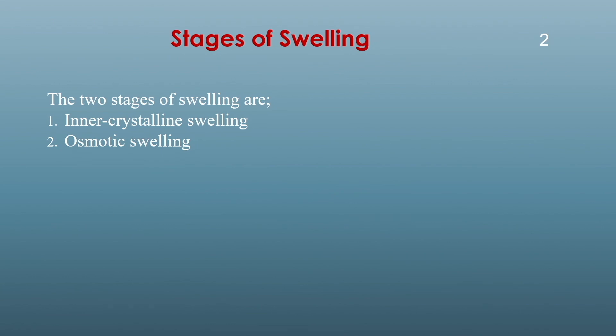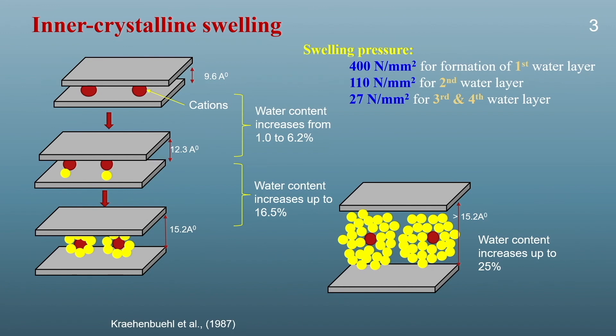When we talk about the swelling of expansive soil, generally the swelling takes place in two stages. The first is known as inner crystalline swelling and the second is known as osmotic swelling. We will discuss these stages one by one. In inner crystalline swelling, a lesser amount of swelling takes place, and this swelling process generally occurs in three to four steps.